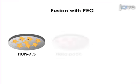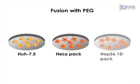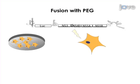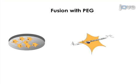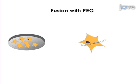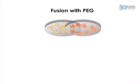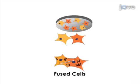For the first method, begin by culturing human liver cells as well as HeLa and Hep G2 1d packaging cells. Next, transfect hepatitis C virus, or HCV, RNA into the liver cells by electroporation. Subsequently, fuse the HCV replicating cell line to the respective packaging cell line by polyethylene glycol.